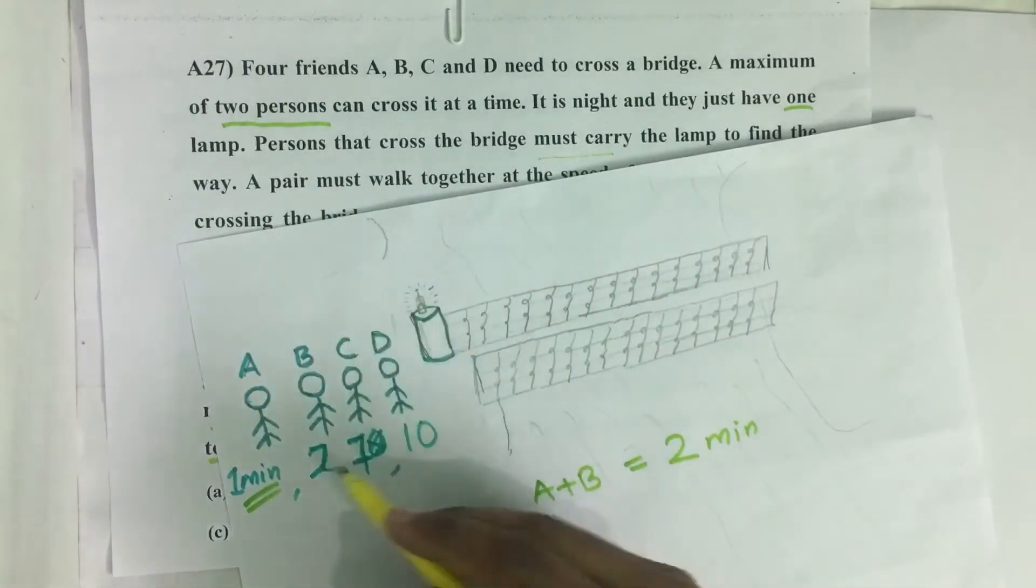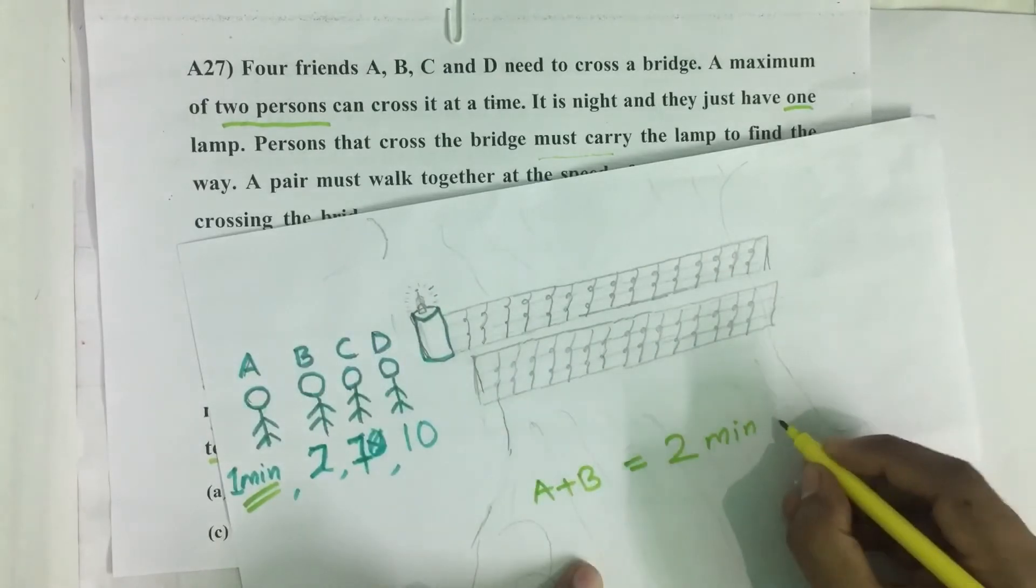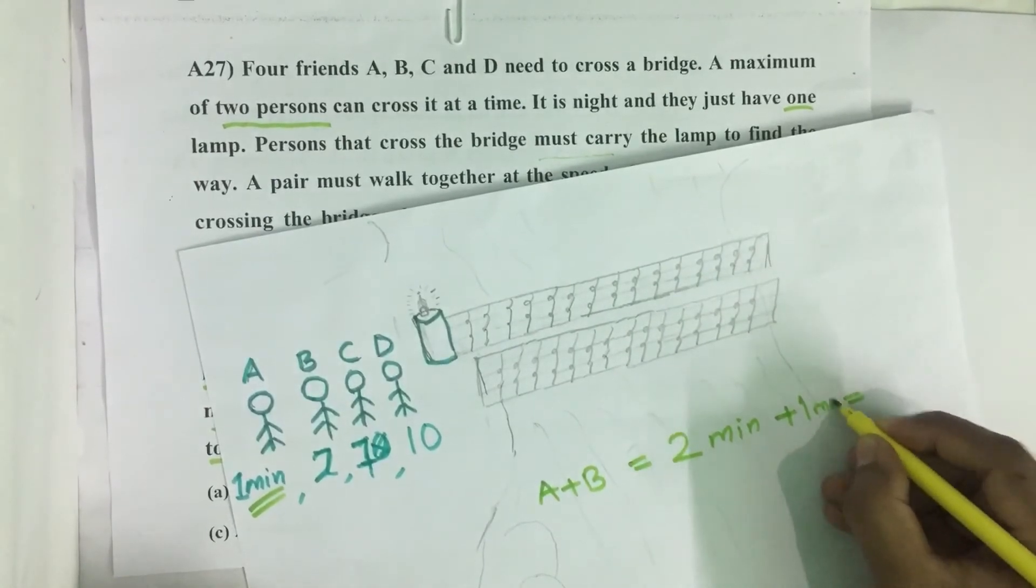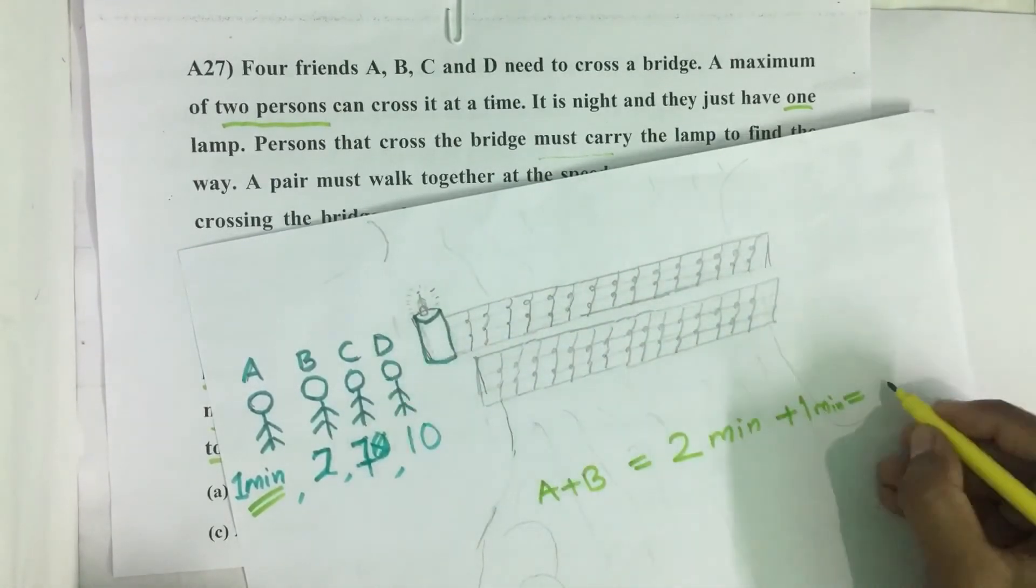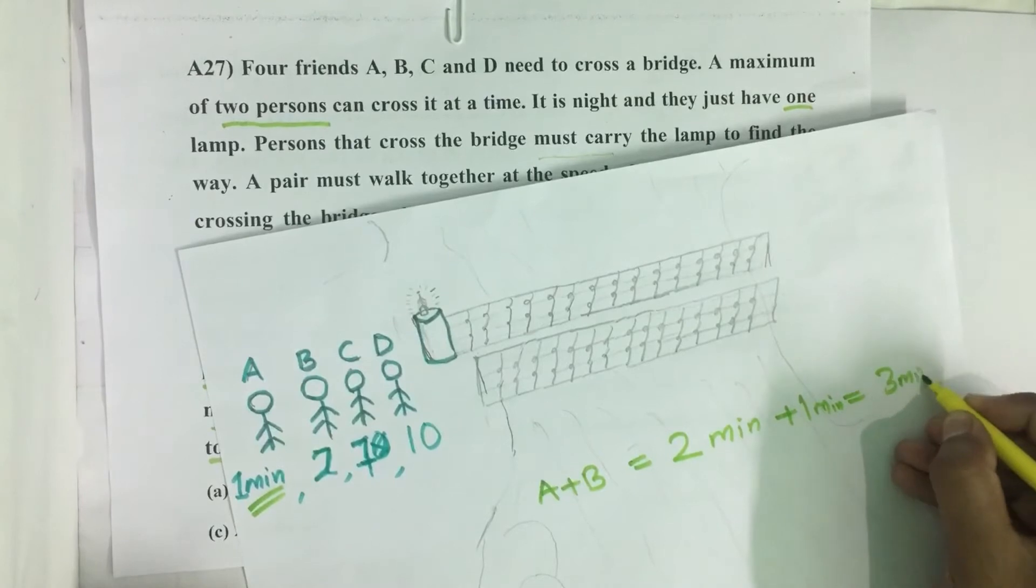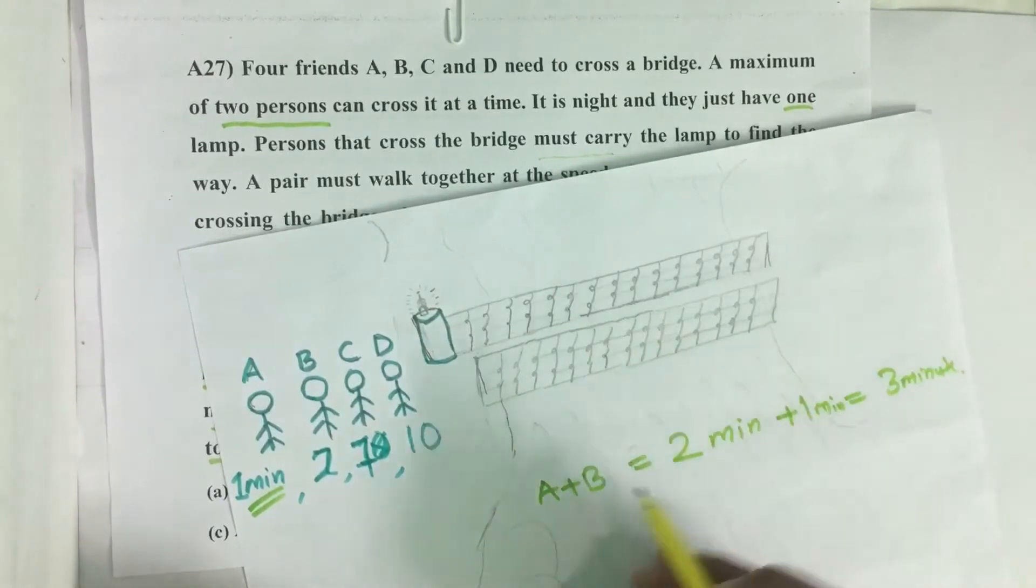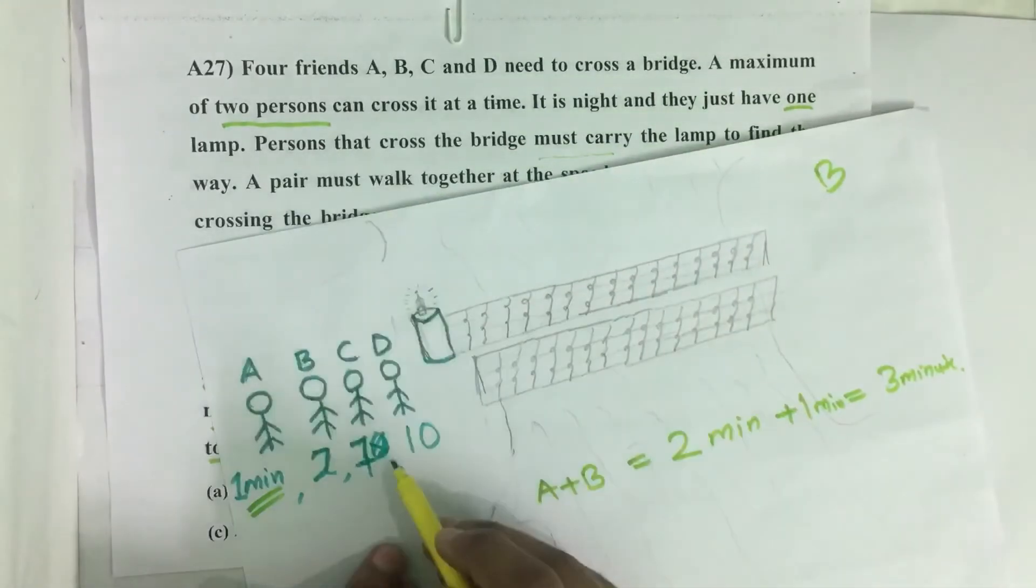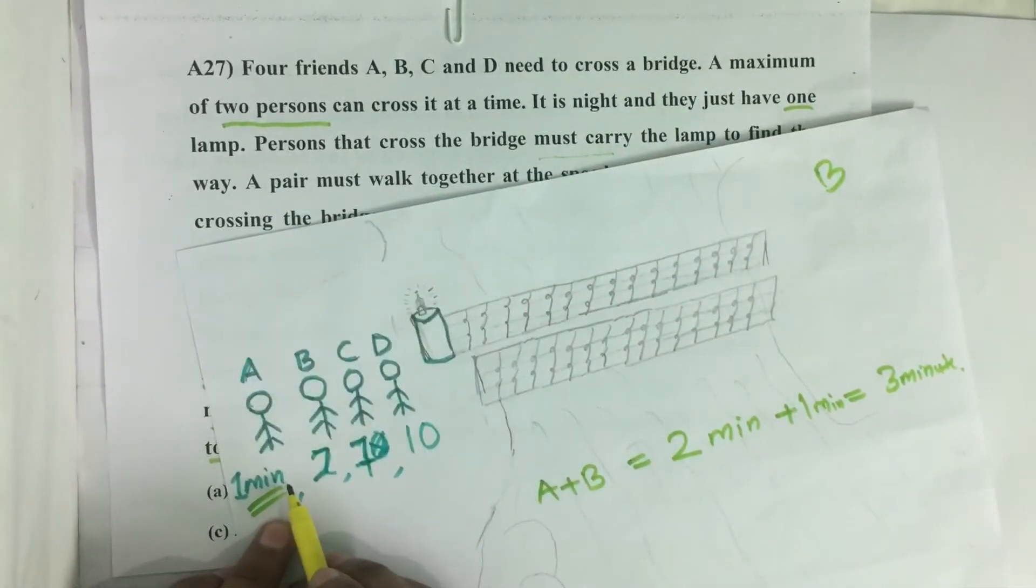To take B to the other side, it will take a total of three minutes. Now A reached this side and came back to his position to take and accompany another person with the lamp.